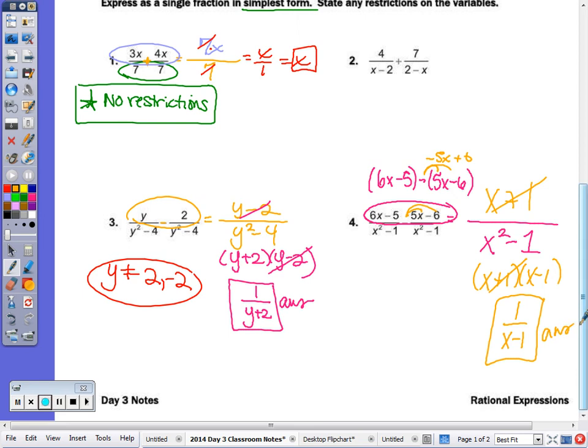Now the restrictions. We can look at the factors. So the factors of the denominator are x plus 1 times x minus 1. Or you can look here. But you always want to look at the original fraction. So the restrictions, x are not equal to positive and negative 1.